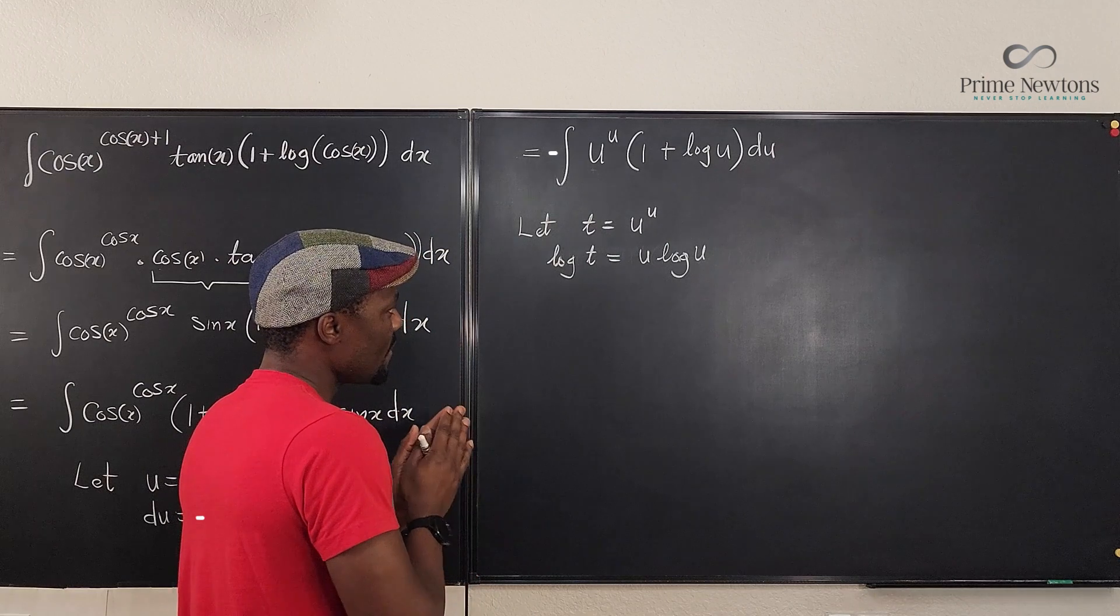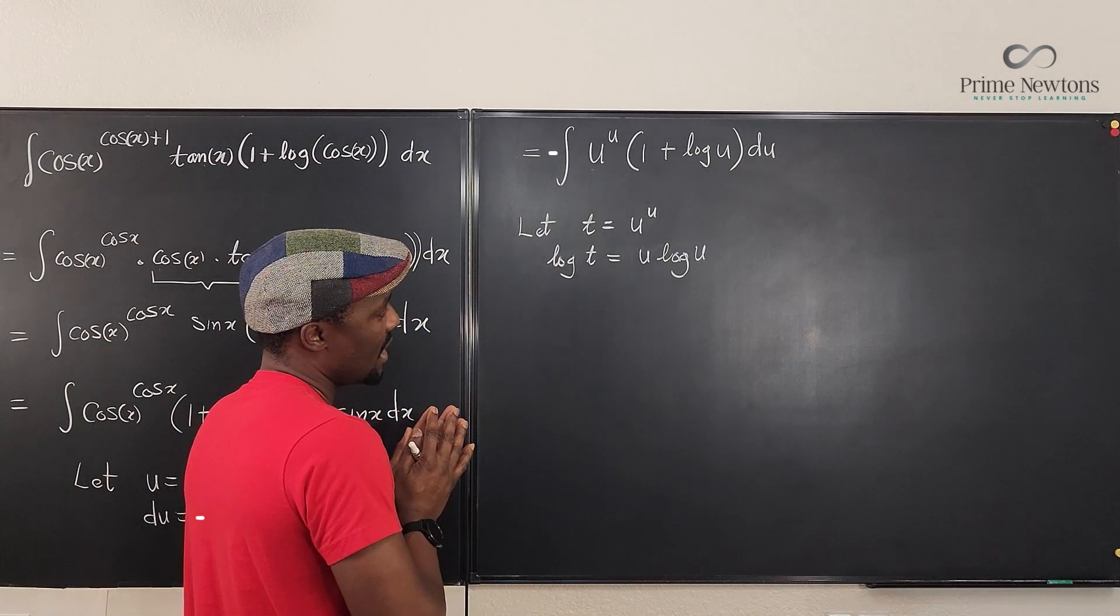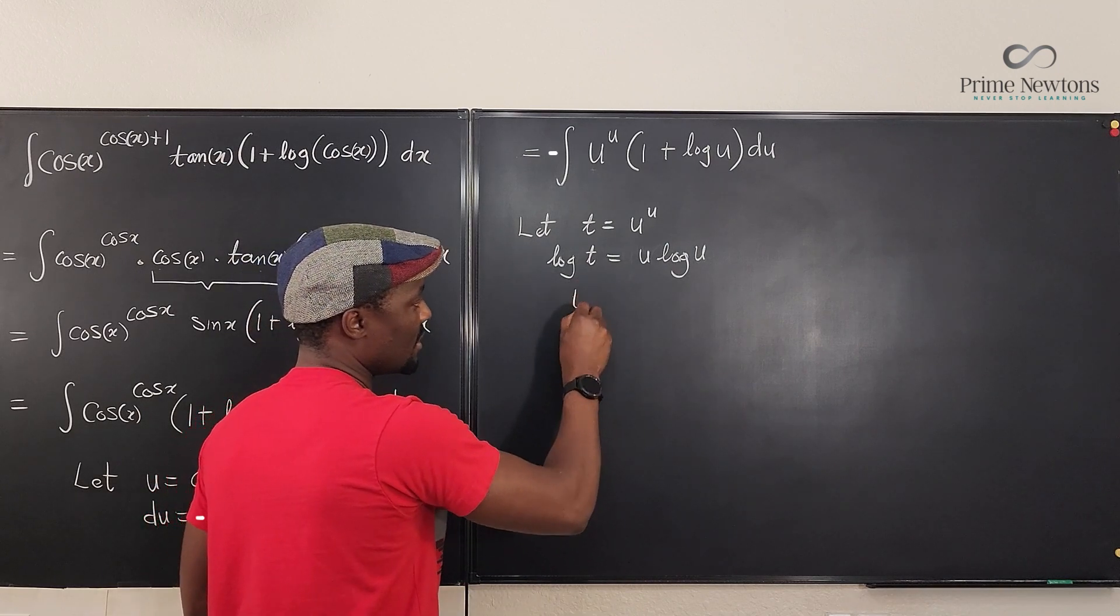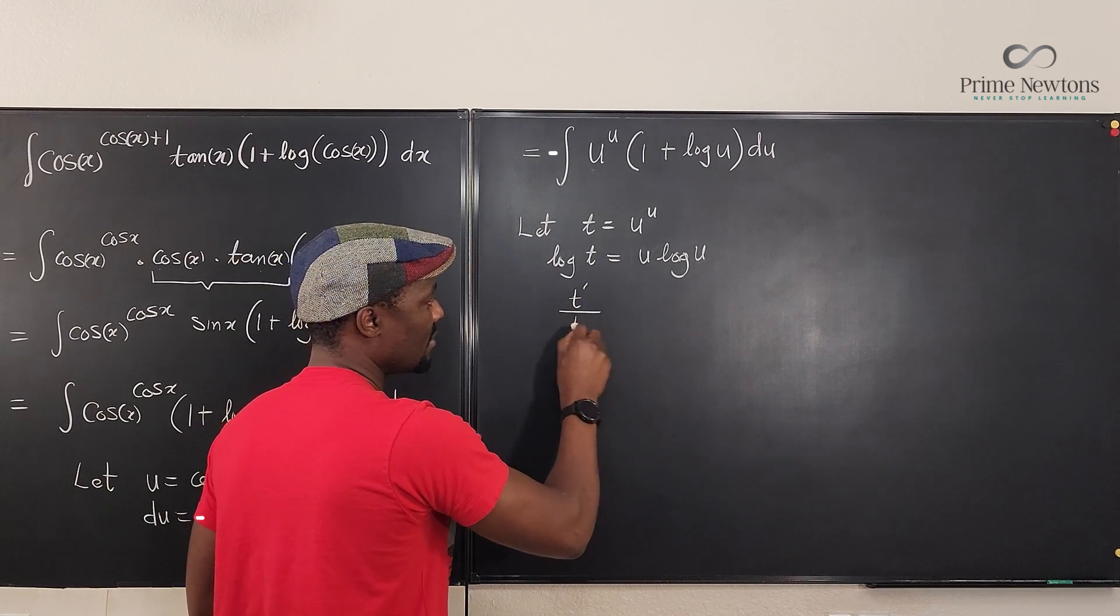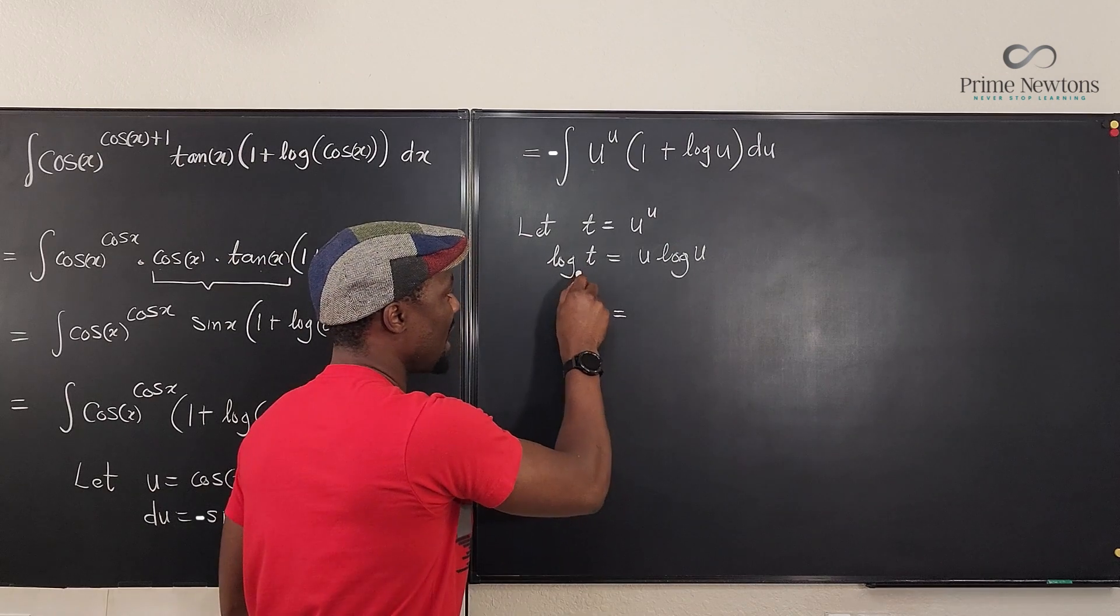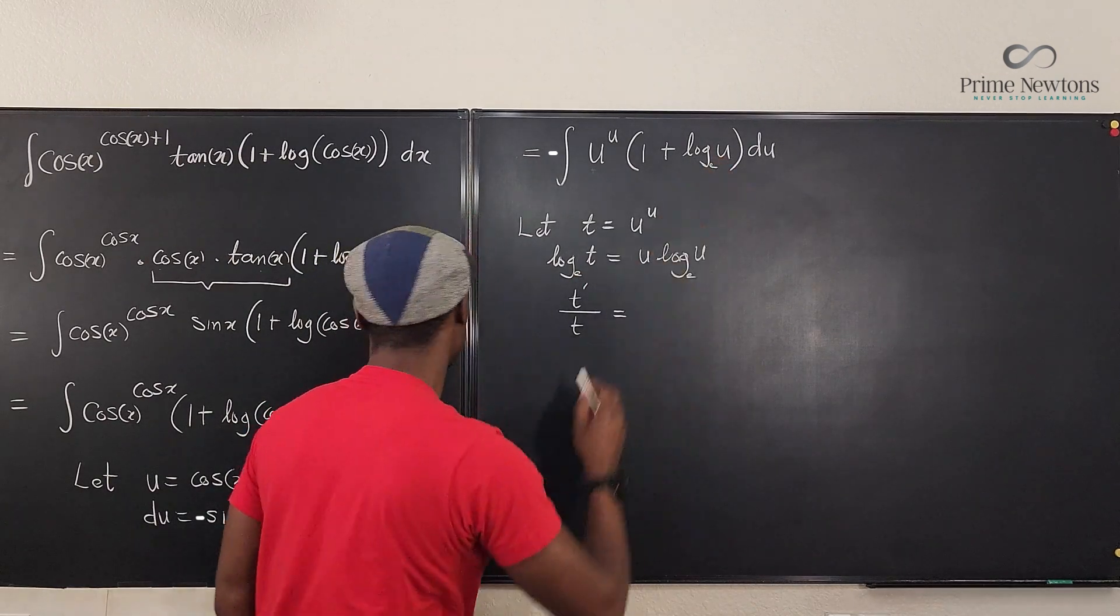Now, what do we have here? If I take the derivative of this, it's going to be t prime over t. That's how you differentiate a natural log function. Don't forget the base is e. I just don't want to keep writing base e. Let me just write it for all of them.